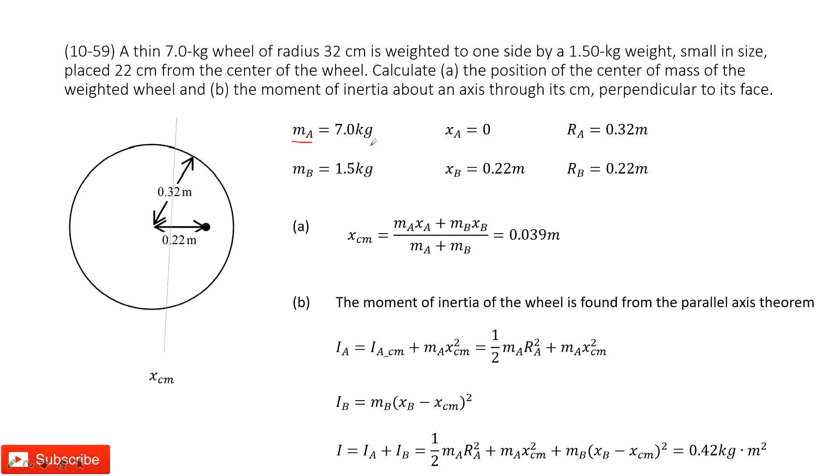We consider it as the point. So the center of mass for A is just zero. We consider it at this point. This point is zero. It is at the center, zero. So the radius is given.